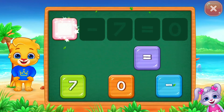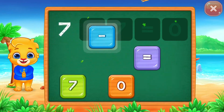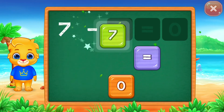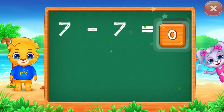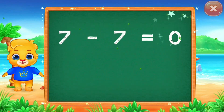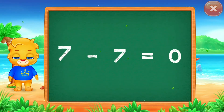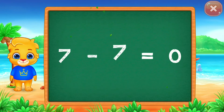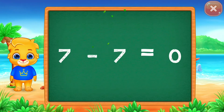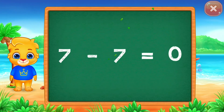Seven minus seven equals zero. Seven minus seven equals zero.